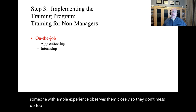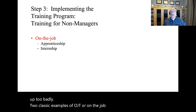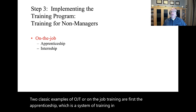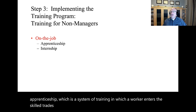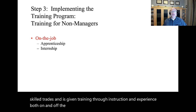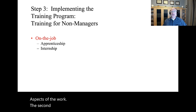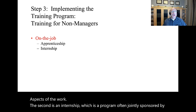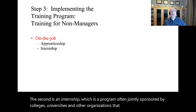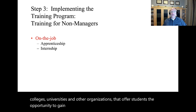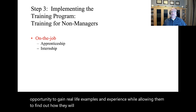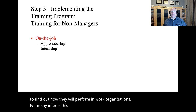Two classic examples of on-the-job training are first the apprenticeship, which is a system of training in which a worker enters the skilled trades and is given training through instruction and experience, both on and off the job, in both the practical and theoretical aspects of the work. The second is an internship, which is a program often jointly sponsored by colleges, universities, and other organizations that offer students the opportunity to gain real-life experience while allowing them to find out how they will perform in work organizations. For many interns, this is the stepping stone to a full-time career.